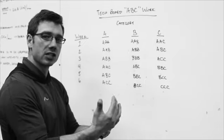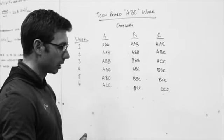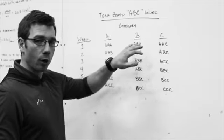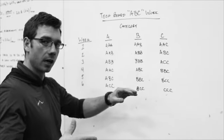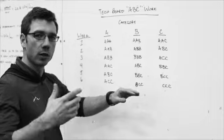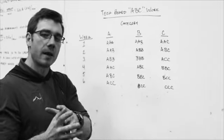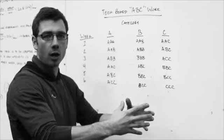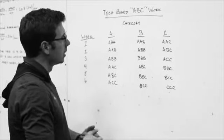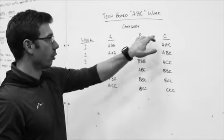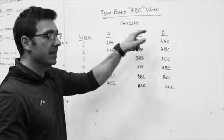So one of the progressions that we're doing is what I call ABC work and we're doing it on our tech board. You've probably seen me describe or seen the videos of me talk through it, talking about how we have hold patterns that I'm having our athletes do based on a certain category. So there are three categories for the ABC work: A, B, and C.